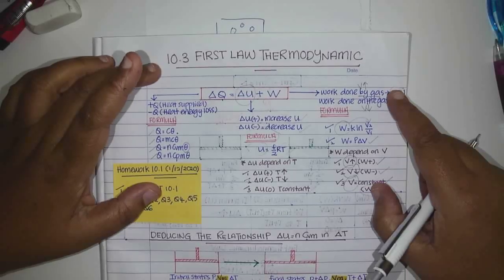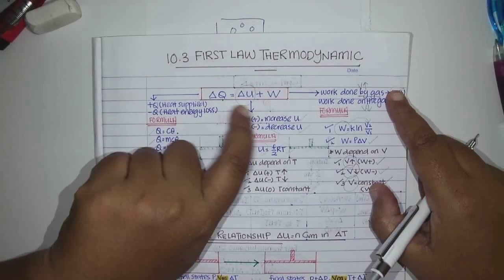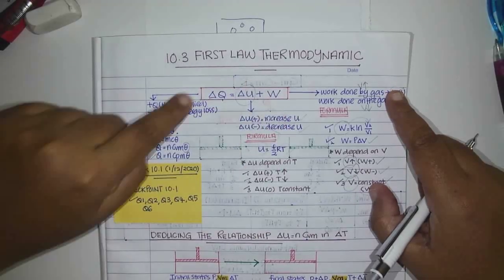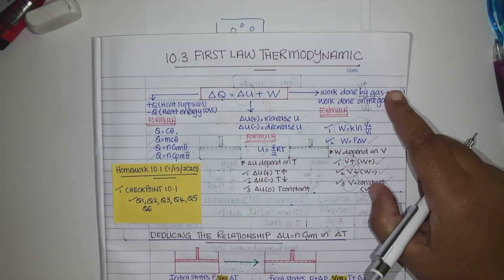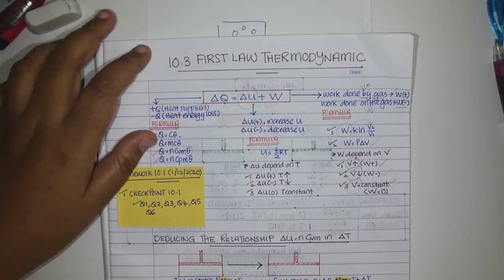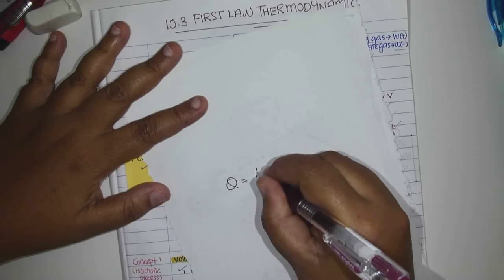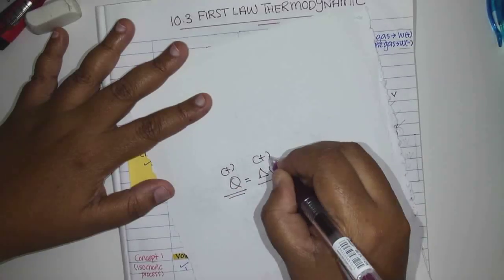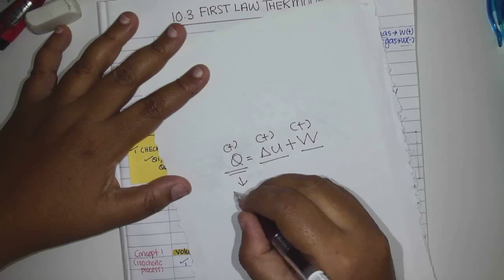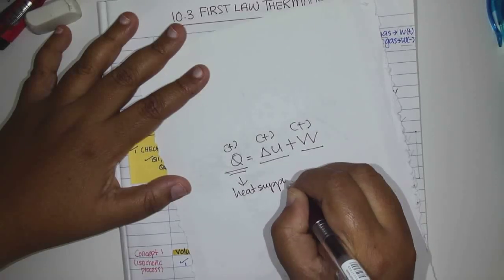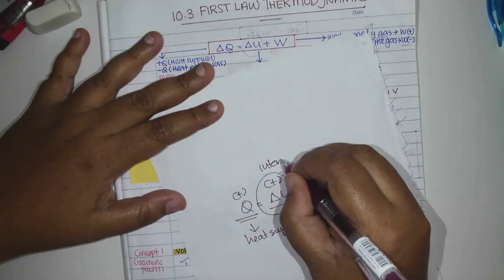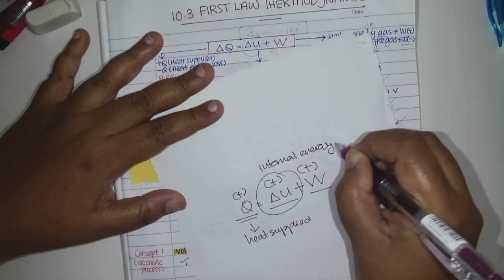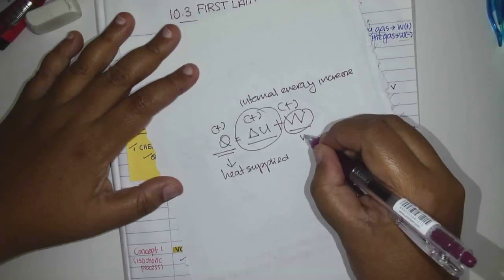This is the first law of thermodynamics, and each quantity here is an energy. For example: if Q equals delta U plus W with all positive values — Q positive means heat supplied, delta U positive means internal energy increases, and W positive means work done by the gas.